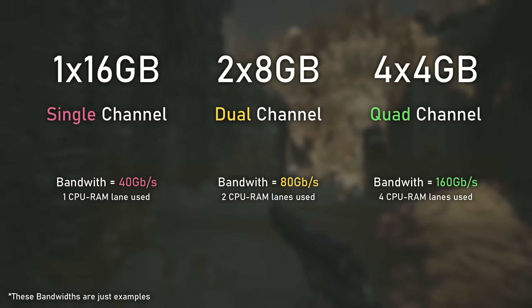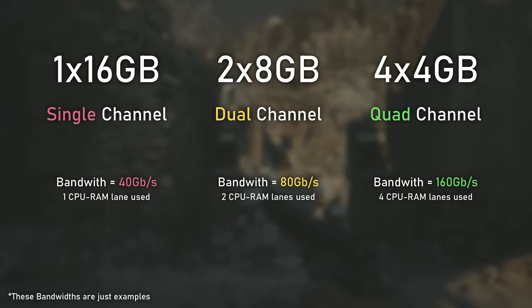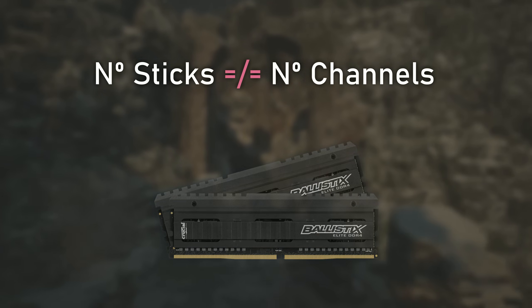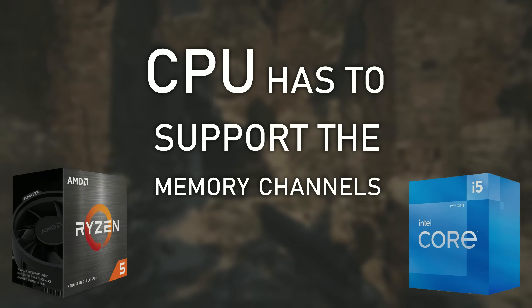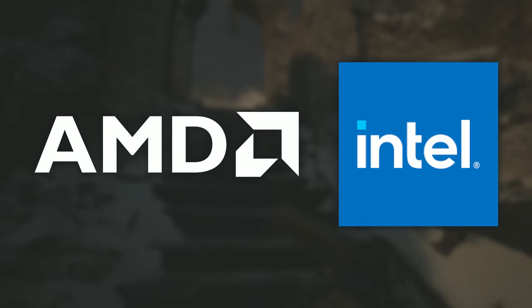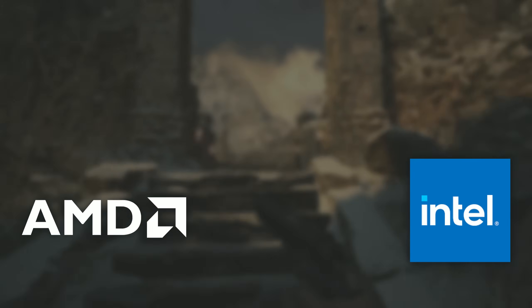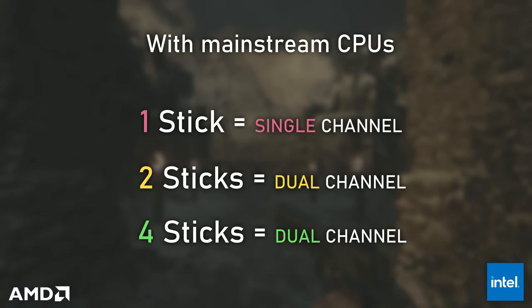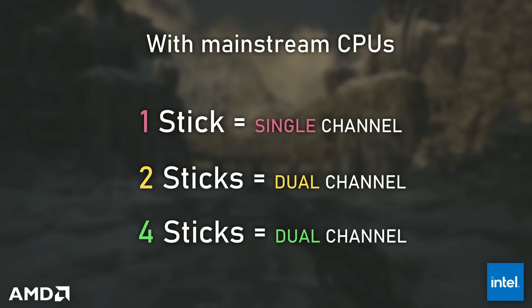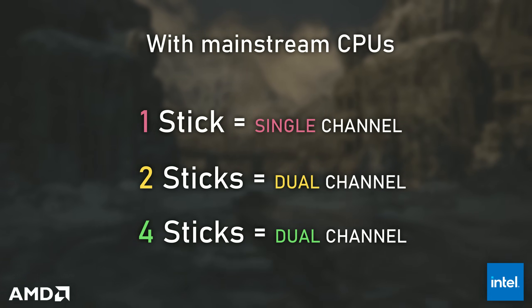By this logic it would always be better to have four RAM sticks, right? Well, not really, because there are some variables. The number of RAM sticks isn't always connected to the number of memory channels, because the CPU has to support those same memory channels. Current mainstream CPUs from AMD and Intel, like the Ryzen 5 5600X used in this video, only support dual channel — meaning that even if you use four RAM sticks, you will still be limited to dual channel, just with two RAM sticks per channel.